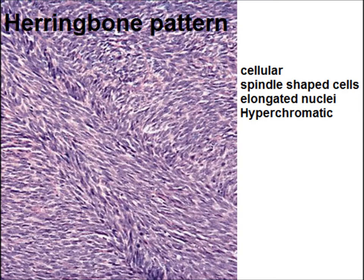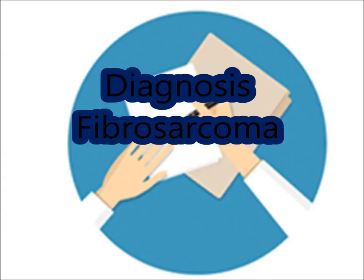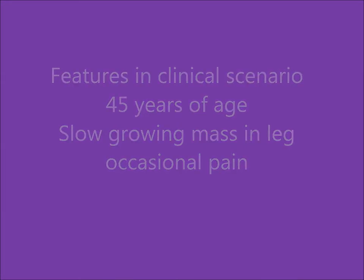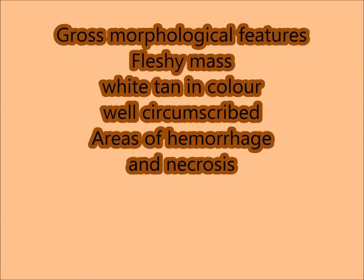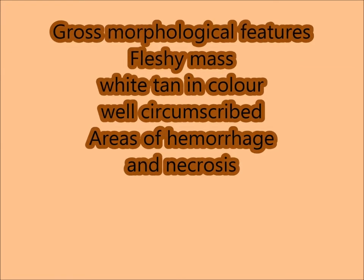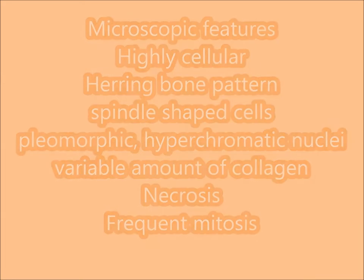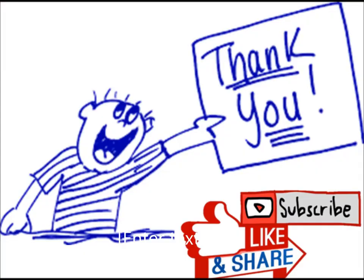The diagnosis is fibrosarcoma. Features supporting this diagnosis in the clinical scenario include: 45 years of age, slow-growing mass in the leg — because these tumors don't have specific clinical presentation — and occasional pain. Gross morphological features are a fleshy mass, white to tan in color, well circumscribed, with areas of hemorrhage and necrosis. Microscopically, the typical features are a highly cellular mass with herring bone pattern, spindle-shaped cells, pleomorphic hyperchromatic nuclei, variable amount of collagen, necrosis, and frequent mitosis.